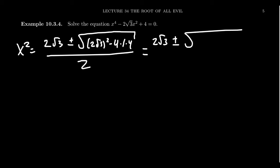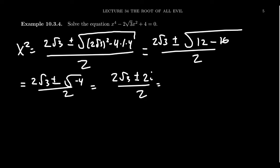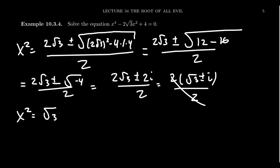And then for the other term, you get negative 4 times 1 times 4, that's 16. This is all over 2. So our discriminant is going to turn out to be negative — we get the square root of negative 4, which turns out to be plus or minus 2i over 2. You can factor out a 2 from the numerator, so you get root 3 plus or minus i over 2. The 2s cancel, and so summarizing: x squared equals root 3 plus i and root 3 minus i.